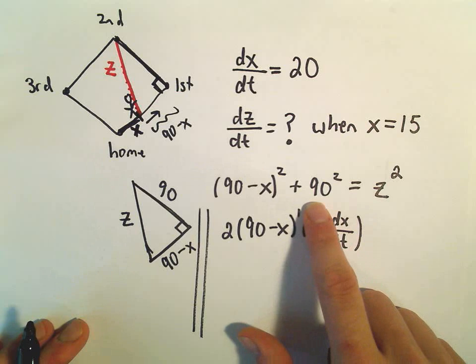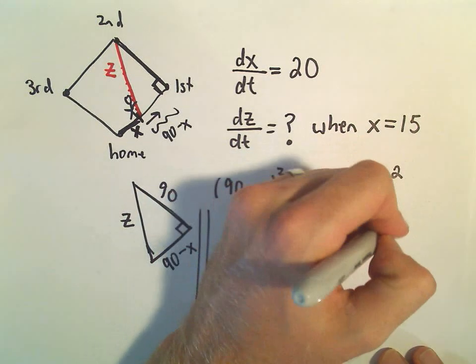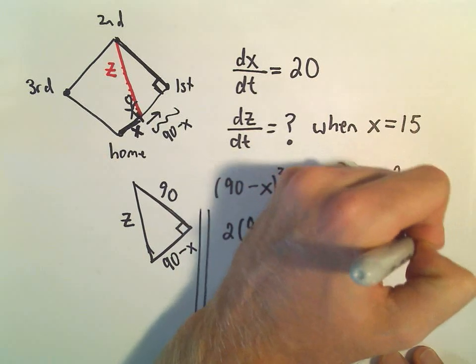So the derivative of 90 squared, that's just 0. It's a constant. And the derivative of z squared will be 2z dz/dt.